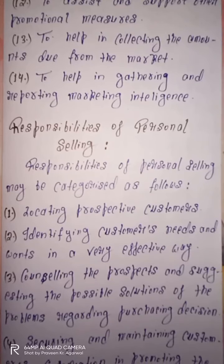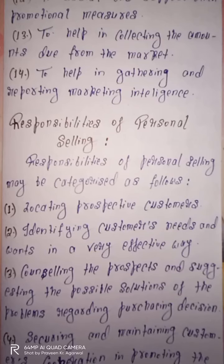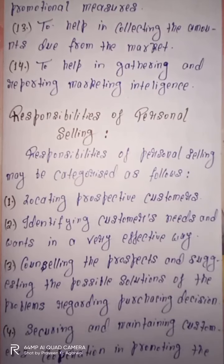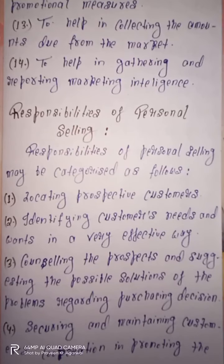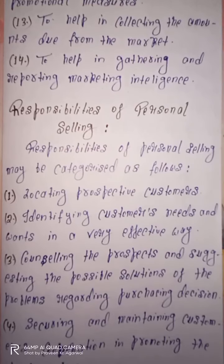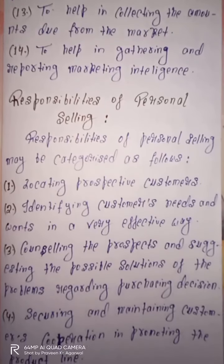Second responsibility kya hai inki — identifying customers' needs and wants in a very effective way. Sabse badi baat hoti hai ki inhe pata karna hai ki jo customers hain, unki basic needs kya hain, unki basic wants kya hain, jo abhi tak kisi bhi company ke products ke dwara fulfill nahi ki ja saki hain. Aisi needs and wants ko effective way me identify kiya jaana ye bahut zaroori hota hai in particular salesman ke dwara, personal selling ki process me. Kyunki agar ye proper needs and wants ko identify kar lenge, toh uske basis par personal selling ki process ko apply karna bahut aasan ho jata hai aur customer ko company ke products sale karna bahut aasan ho jata hai.